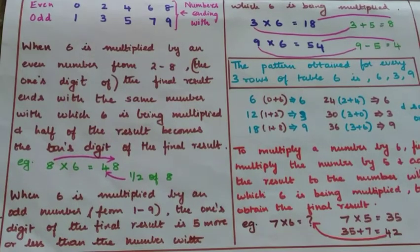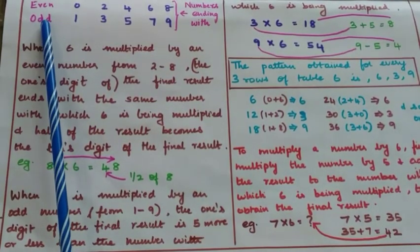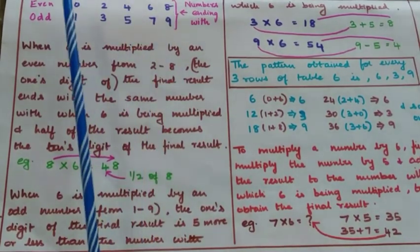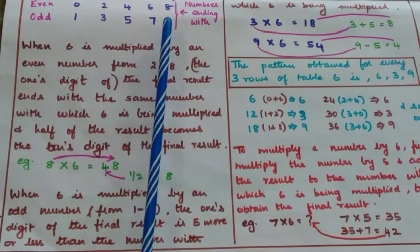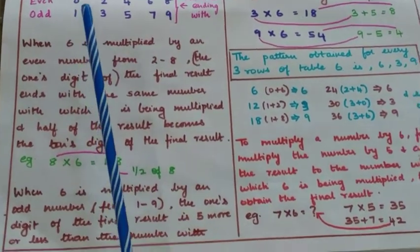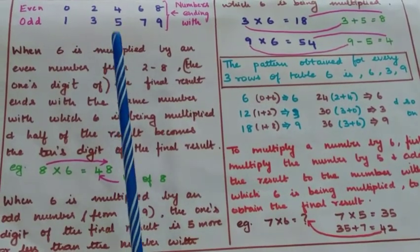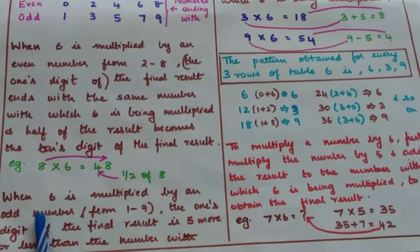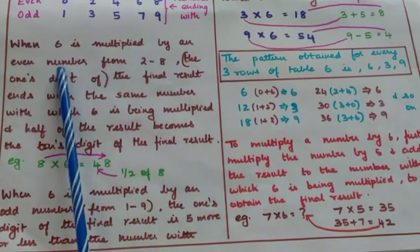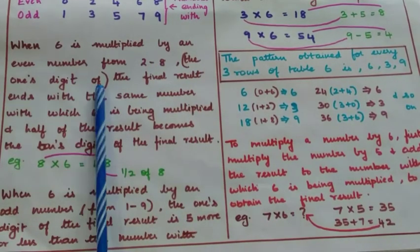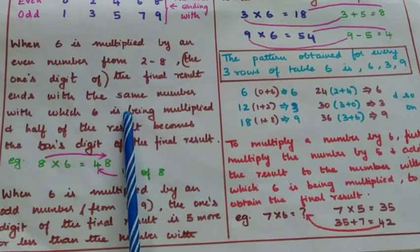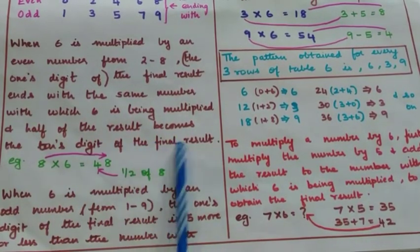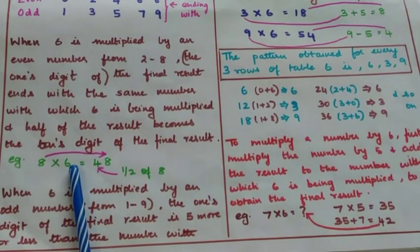By now children should be familiar with even and odd numbers. Numbers ending with 0, 2, 4, 6 and 8 are even; numbers ending with 1, 3, 5, 7 and 9 are odd. When 6 is multiplied by an even number from 2 to 8, the ones digit of the result ends with that same even number, and half of that number becomes the tens digit. For example, 8 multiplied by 6: since 8 is even, the result ends in 8, and half of 8 becomes the tens digit.